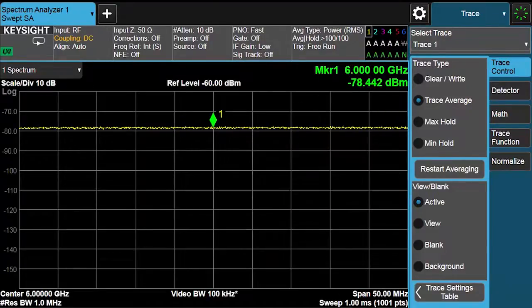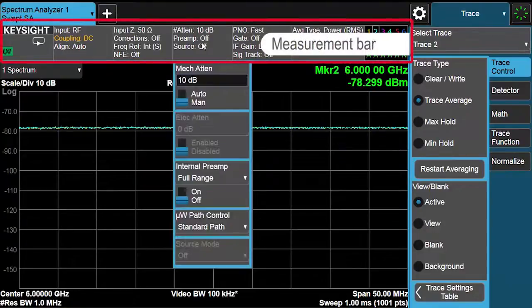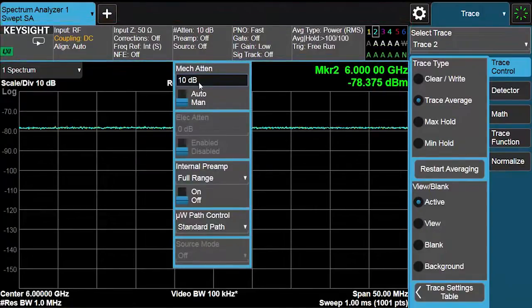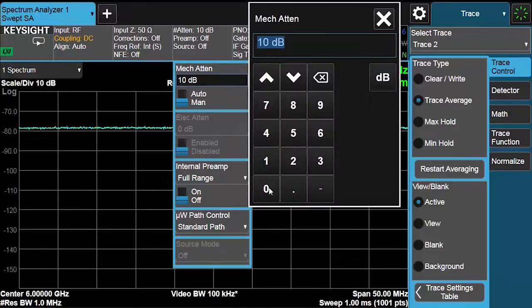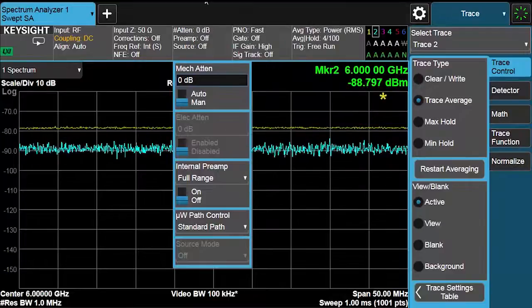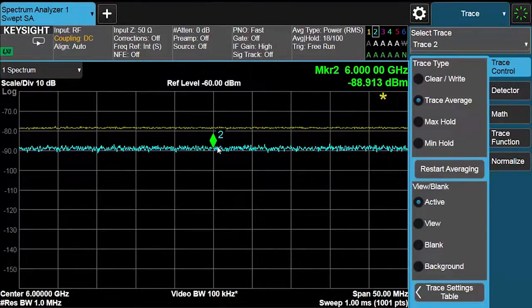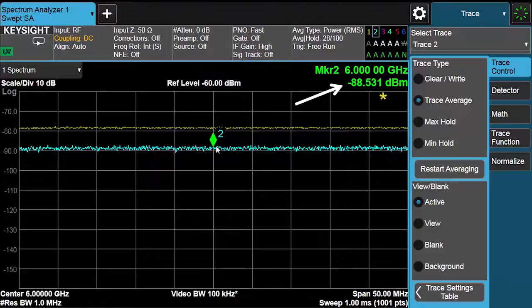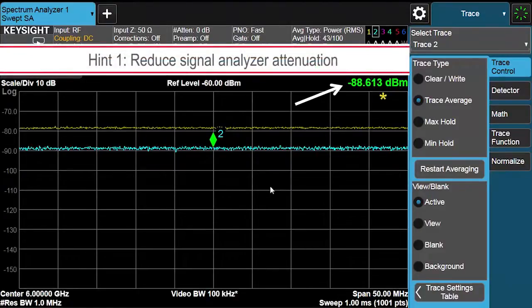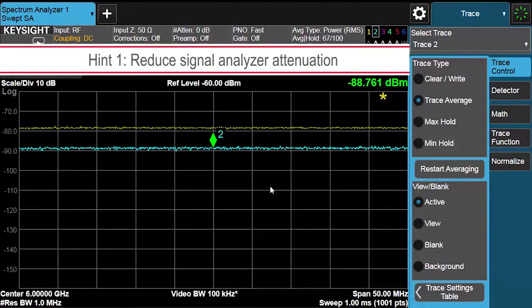First, let's see what happens when I drop the input attenuation from 10 dB down to 0 dB. I have easy access using our measurement bar to common measurement settings. My attenuation setting is here, and I'll change that to 0 dB. I've set marker two onto trace two, and we're getting a reading of minus 88 dBm. By dropping the attenuation by 10 dB, we actually will drop the noise floor by 10 dB as well. And you can see that our sweep speed is still at one millisecond.